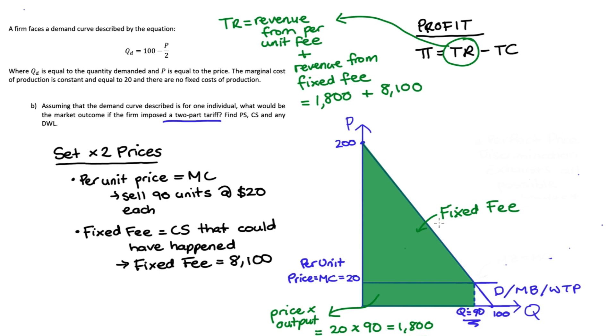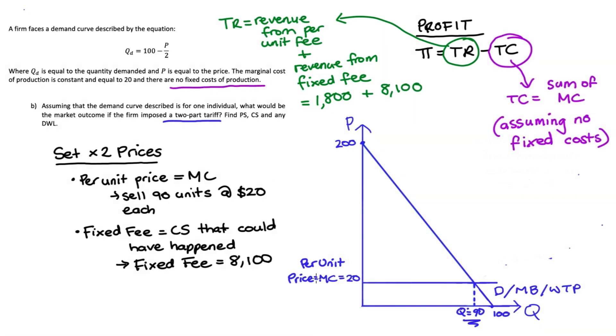Total cost, and we have to assume no fixed costs here, but that's stated in the question, will just be equal to the sum of the marginal costs of production for each unit traded. The marginal cost for each unit is constant at 20, and we sell 90, so total cost will be 20 times 90 (assuming no fixed costs). Visually, that's our rectangle under marginal costs, 20 times 90, which is 1,800. That's the purple area.